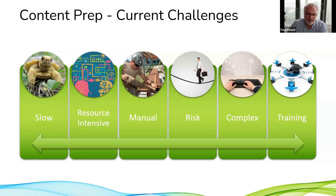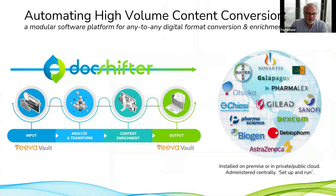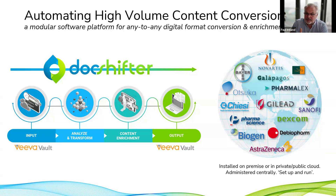Those are some of the challenges we're looking to address with automation. Docshifter is ultimately a software platform used for any-to-any digital format conversion and enrichment. It can be used in many different ways. We look at taking content from one location in Viva or anywhere else, analyzing the content, transforming it from one format to another or reporting on it, enriching the content if we've converted it, and outputting the results back into Vault or somewhere else.